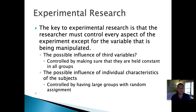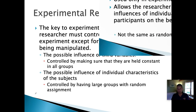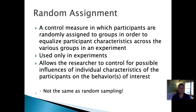You take a group of a hundred people — people of all walks of life, young and old, tall and short, all kinds of characteristics — and then you simply take 50 of them at random and put them in a control group and the other 50 in the experimental group. This is random assignment, a control measure in which you take all participants and randomly assign each one to a specific group. Because they're randomly assigned, this is believed to equalize participant characteristics across the various groups.